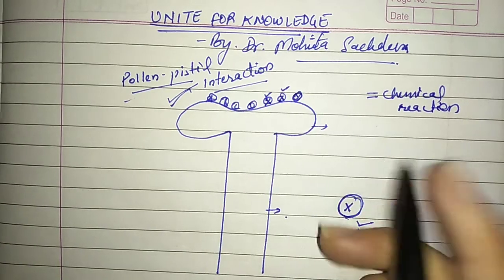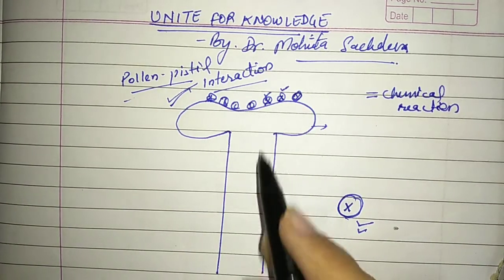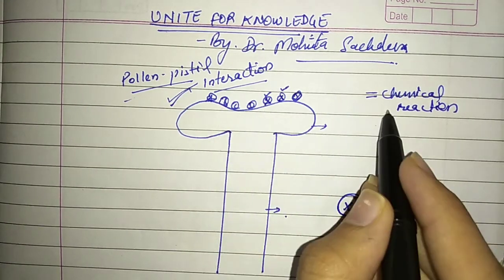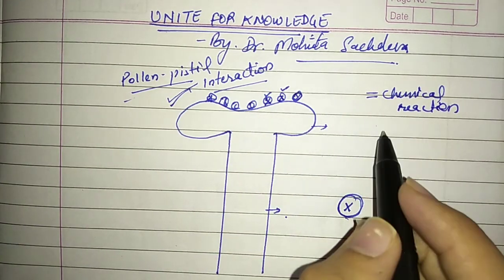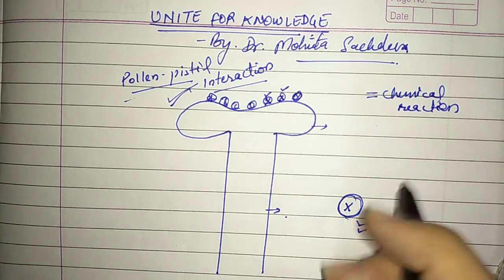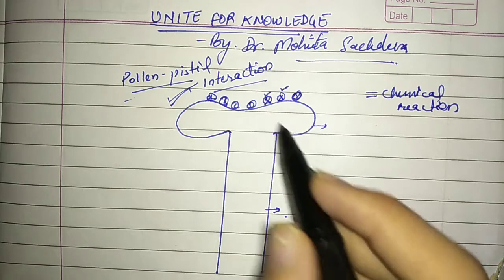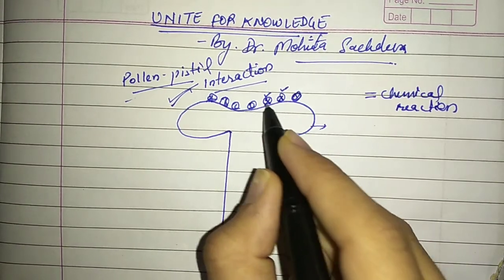From this chemical reaction, the compatibility of the pollen grain will be determined. Is this pollen grain compatible to form a pollen tube or not? Is it compatible for fertilization here or not? Chemical reactions will occur, products will form. If that product is correct according to the stigma, then it will allow the pollen grain to form a pollen tube.